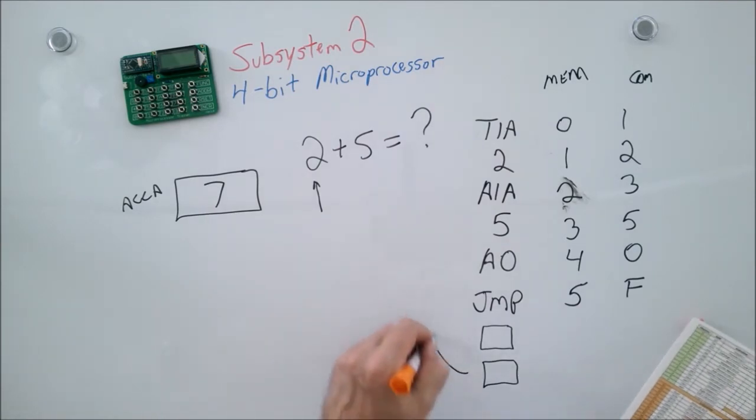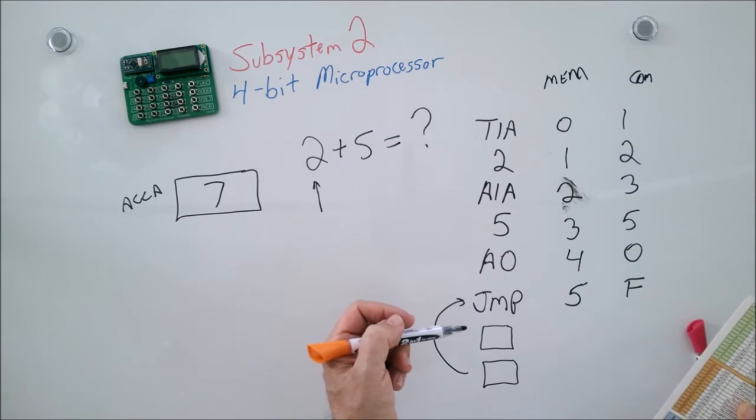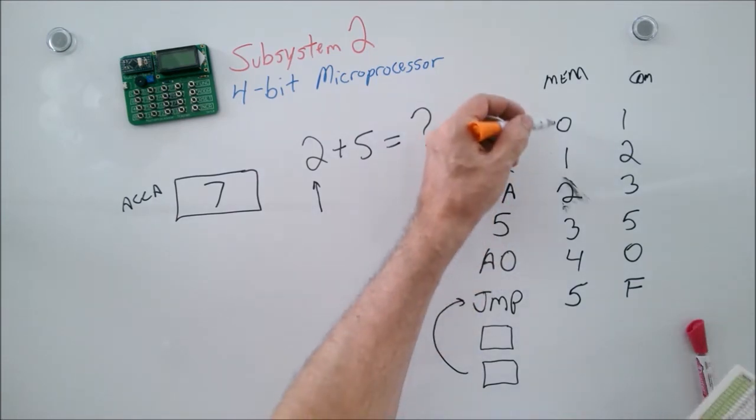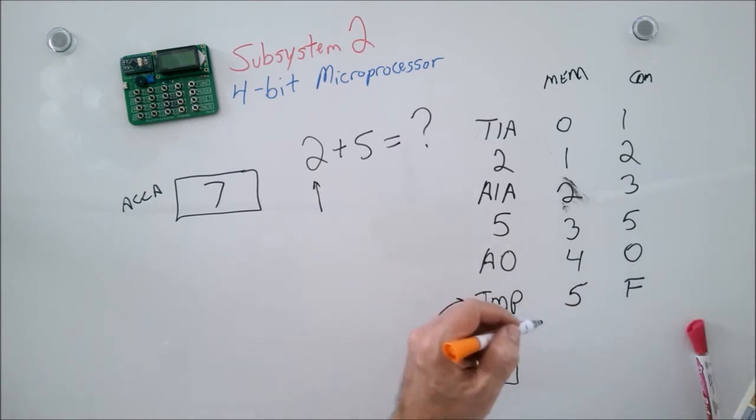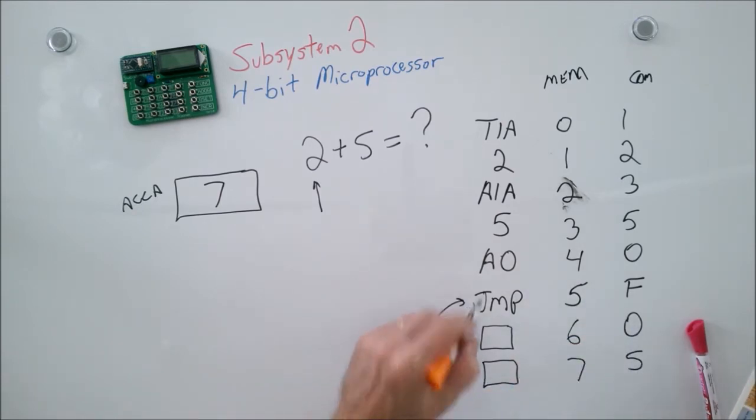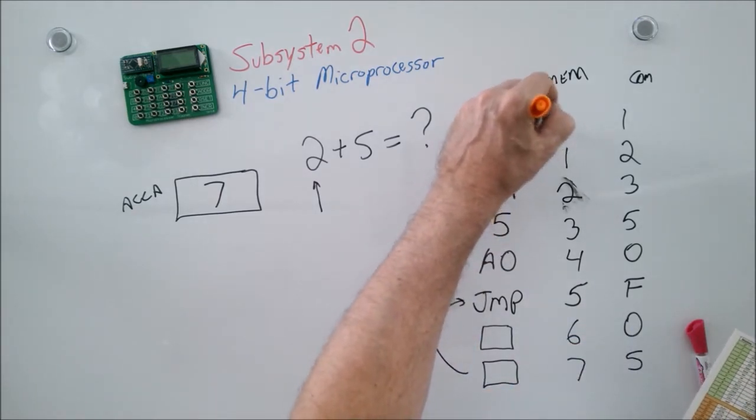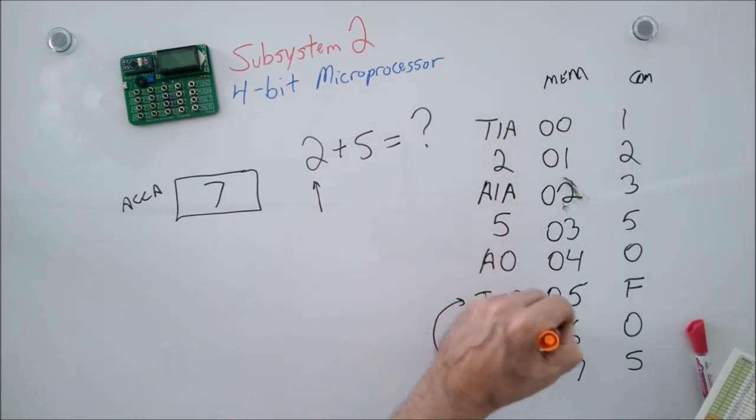And since that's memory location five, and I need two digits to fulfill it, I'm actually going to put in six and seven, zero, five. So that'll jump me back to memory location five. Because like I said, each one of these memory locations can be two digits. So really, these are the memory locations I'm dealing with.